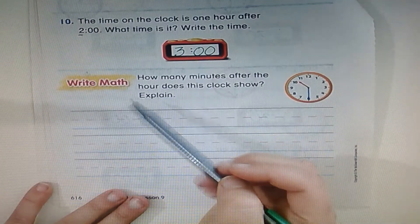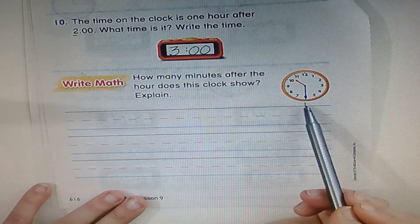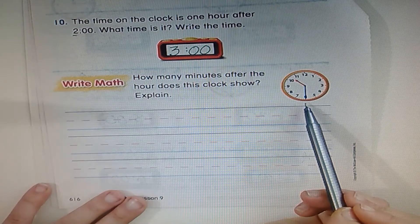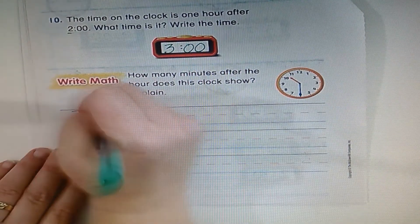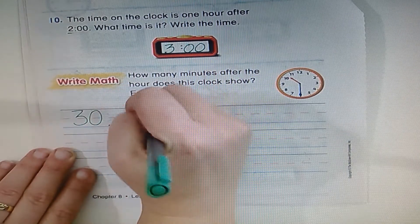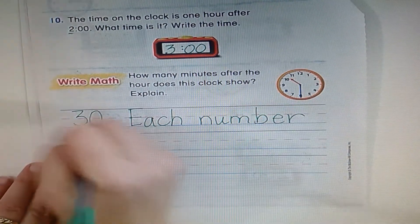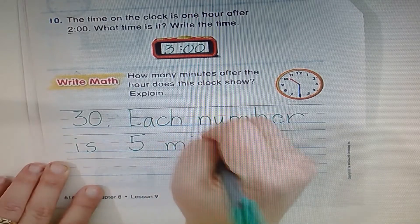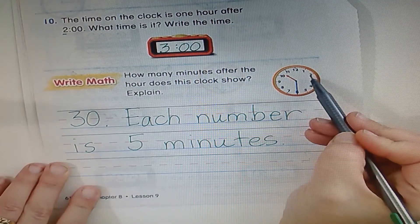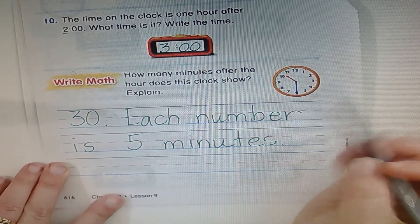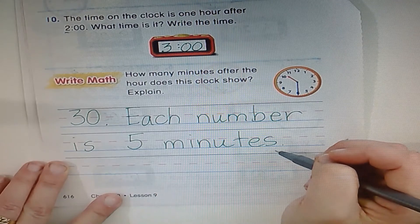This question where I want you to write about math says, how many minutes after the hour does this clock show? When the minute hand is on the six, how many minutes? I hope you said 30. And we're going to write, and it's because each number is five minutes. Each of these numbers is five minutes: 5, 10, 15, 20, 25, 30, but only for the minute hand, which is the long hand. Go ahead and pause the video and finish writing that before we turn to the next page.